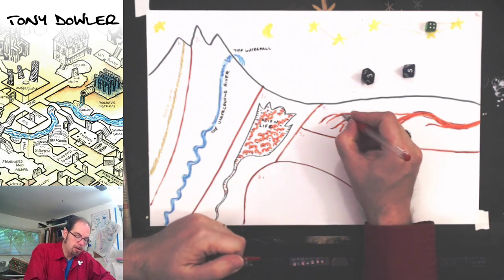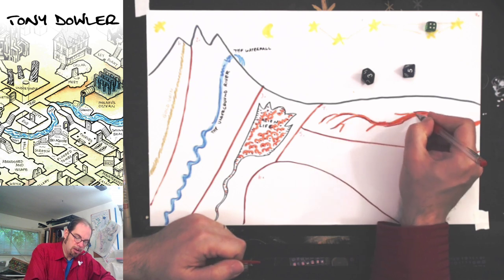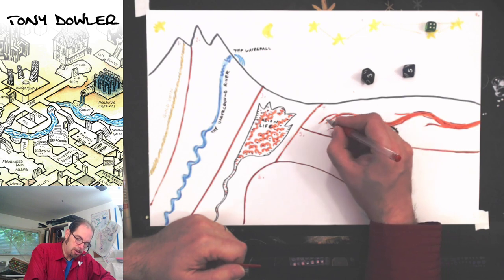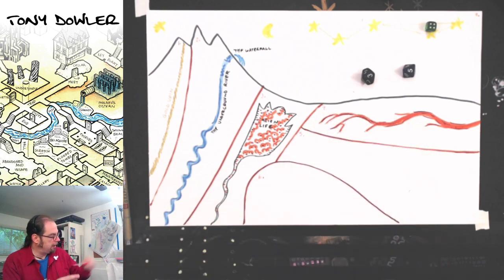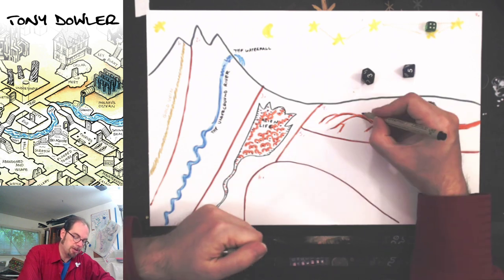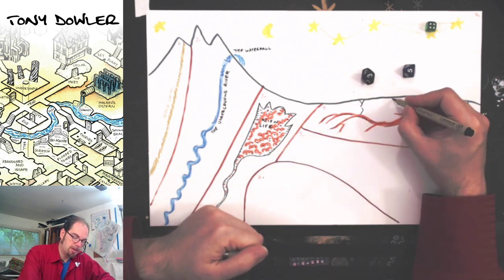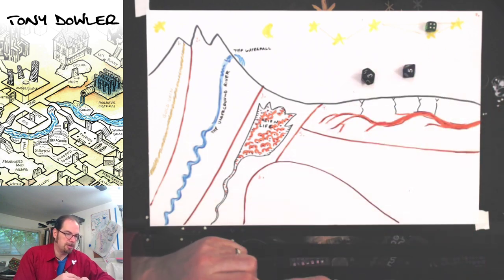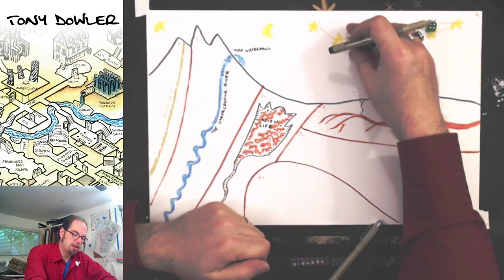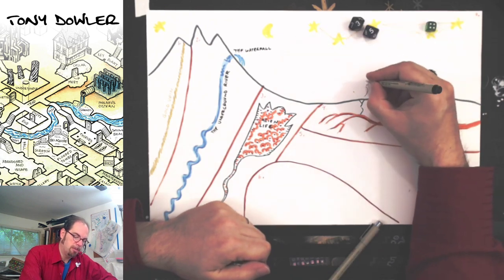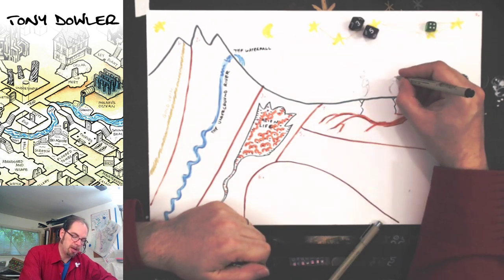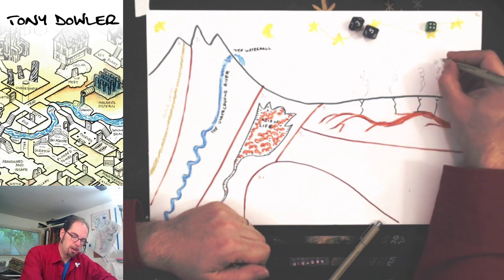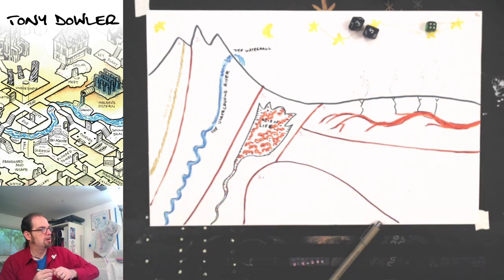The game doesn't necessarily tell me to do this, but I'm just going to draw some cracks here leading to the surface and some steam vents. I think there are maybe natural hot springs or geysers where this magma comes up.